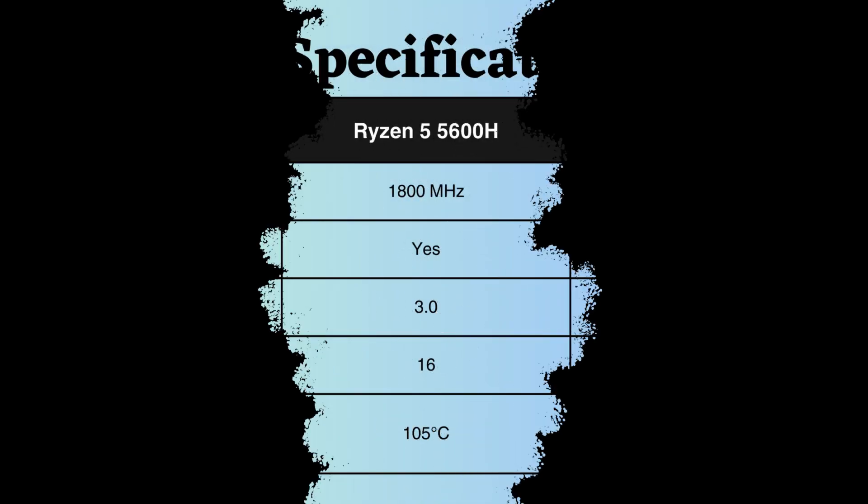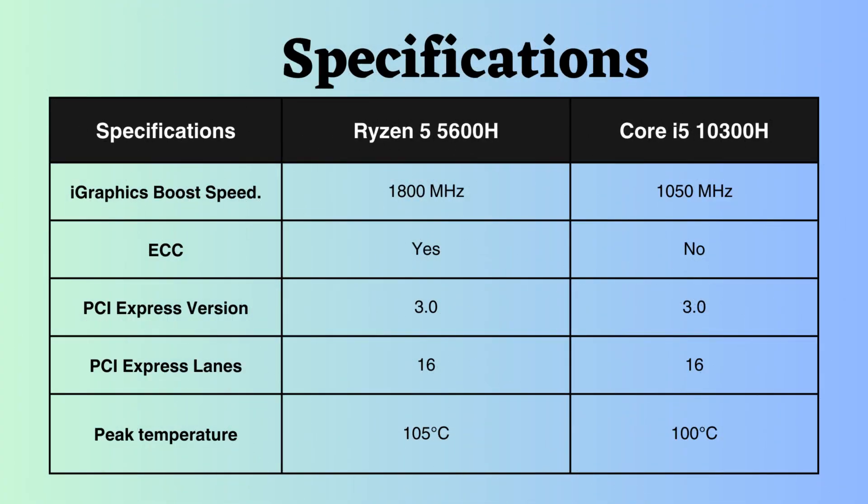Both processors support integrated graphics, with the boost frequency of the Ryzen 5600H at 1,800 MHz and that of the Intel 10300H at 1,050 MHz. The higher boost clock frequency for the integrated graphics in the Ryzen makes it potentially perform slightly better in graphical activities.